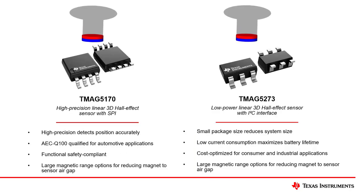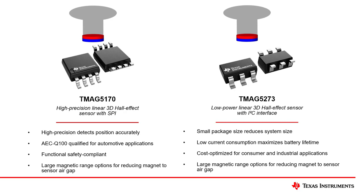An alternative, more robust joystick implementation can be created by using a magnet that moves along with the joystick and a linear 3D hall sensor to sense the magnetic flux density from the moving magnet. Since hall-based joysticks are contactless, they are more reliable than traditional potentiometer-based implementations.